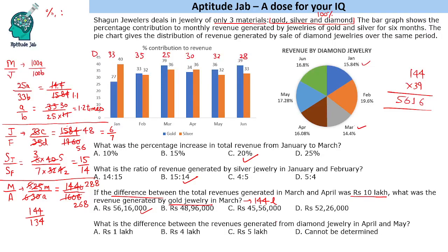Fourth question: what is the difference between revenues generated from diamond jewellery in April and May? We need to understand — we are only given percentages. We can only find percentage-based or ratio-based answers. Unless we are given an actual number, we cannot find the difference or any absolute value. In question three we were given the difference of 10 lakhs, which allowed us to solve it. Without such a value, we cannot find the actual revenues — it could be 288 and 268, or 72 and 67. So the answer to this question is: cannot be determined.